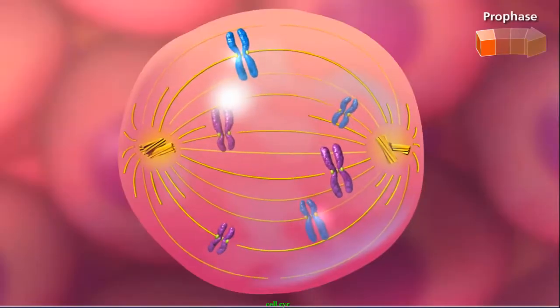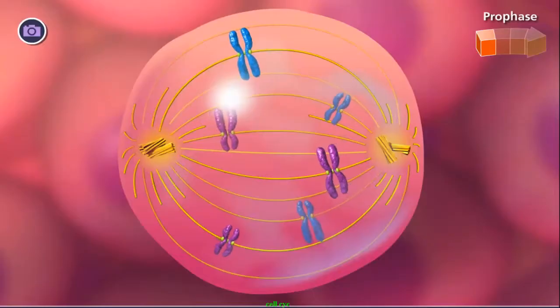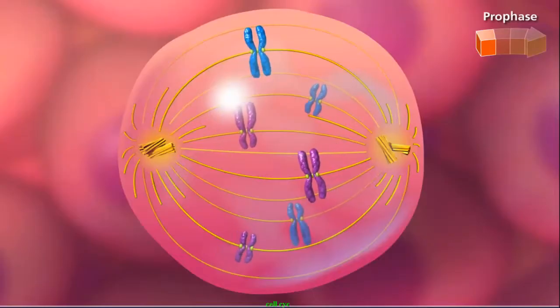Towards the end of prophase, chromosomes attach, by proteins in their centromeres called kinetochores, to microtubules from each pole, moving the chromosomes toward the equator of the cell.